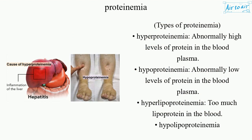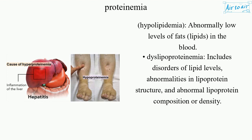Hyperlipoproteinemia — too much lipoprotein in the blood. Hypolipoproteinemia, also known as hypolipidemia — abnormally low levels of fats and lipids in the blood.